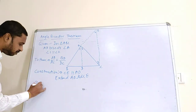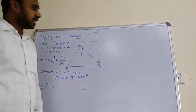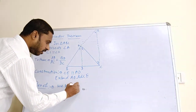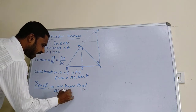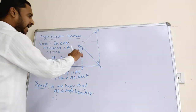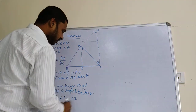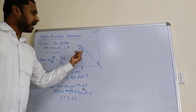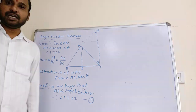Now let's move towards the proof. First thing: Angle 1 is equal to Angle 2. We know that AD is the Angle Bisector, therefore Angle 1 is equal to Angle 2. You can write this as Equation Number 1.